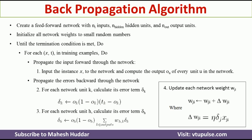This is the entire backpropagation algorithm. First we need to create a feed-forward network with ni inputs, n_hidden units, and n_out output units. After that we need to initialize all the network weights to small random numbers. First we will see how to create a feed-forward network with these numbers of units.